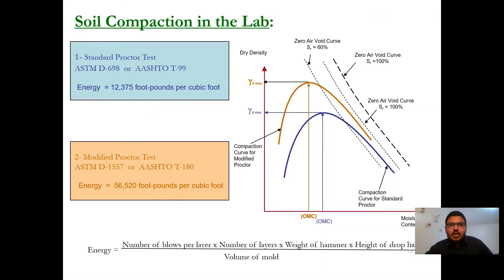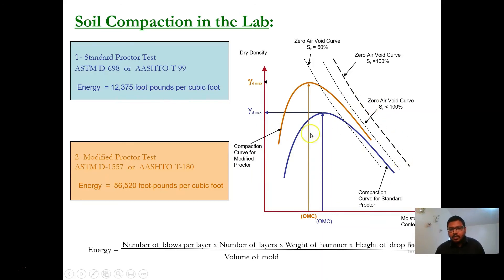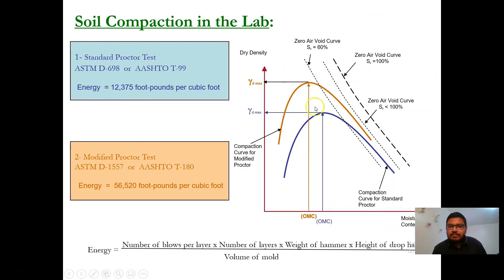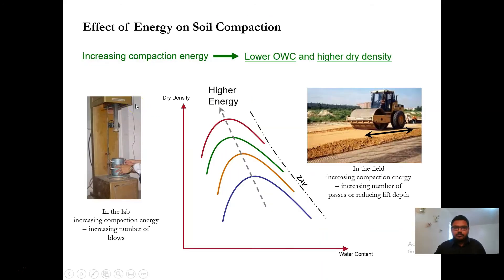Depending on whether you are doing a standard Proctor test or a modified Proctor test, the compaction curve will change. The standard Proctor test produces the orange curve. If we apply more energy, the curve shifts upward and slightly to the left — so higher energy shifts the compaction curve toward the upper-left position.